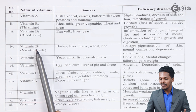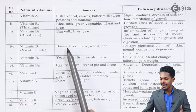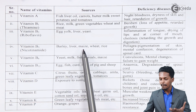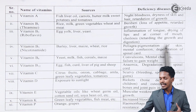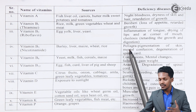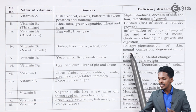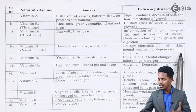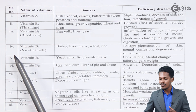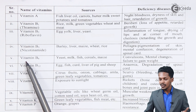Vitamin B5 is also known as nicotinamide. We get it from barley, liver, maize, wheat, and rice. The deficiency disease it can cause is pellagra, which includes pigmentation of skin, mental confusion, and degeneration of the spinal cord.